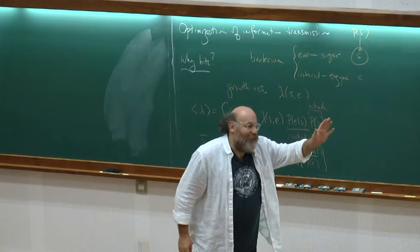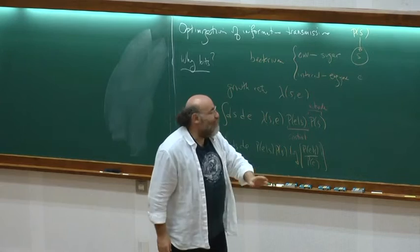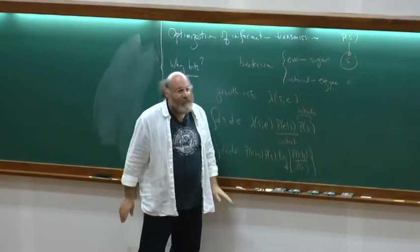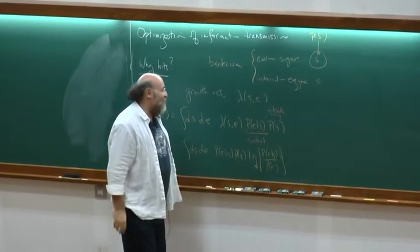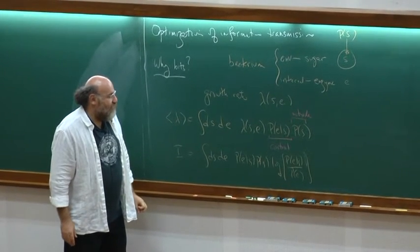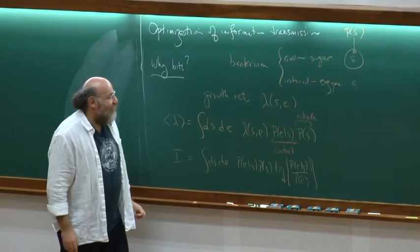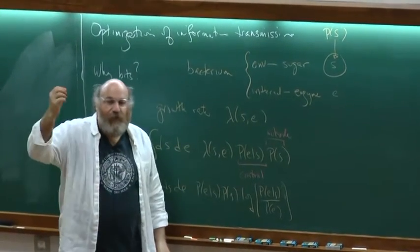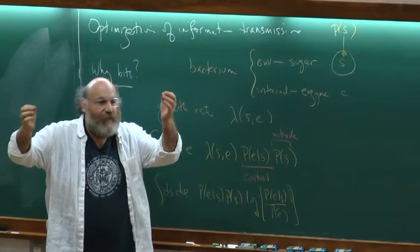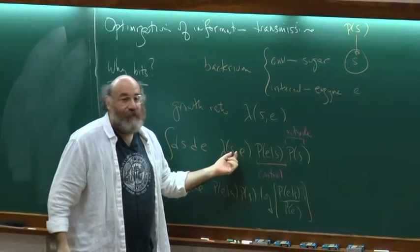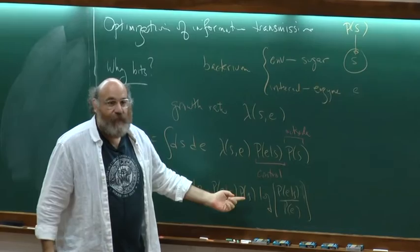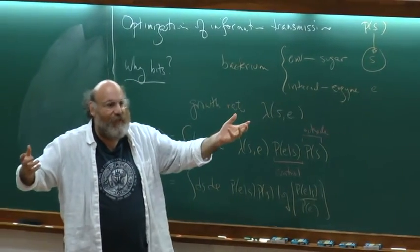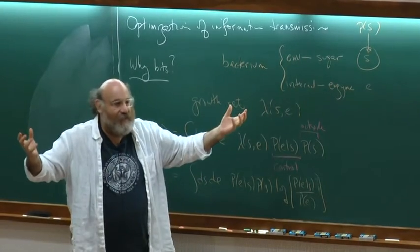You might say: just look at this function — if I hold s fixed it has an optimum as a function of e, so why not go there and move to the new optimum when s changes? The answer is that there's another quantity you can compute: the mutual information between the sugar concentration on the outside and the enzyme concentration on the inside. If I look inside one bacterium and see the enzyme concentration e, how much do I know about what the sugar concentration is outside? If the enzyme is expressed precisely at the maximum of lambda, this mutual information will be infinite — meaning somewhere in the sensing and control apparatus there needs to be a communication channel of infinite bandwidth, and it doesn't have that.